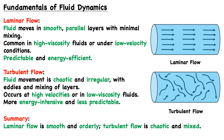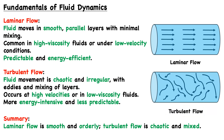Laminar flow is essentially the opposite of turbulent flow. In turbulent flow, fluid movement is chaotic and irregular, with eddies — essentially small whirlpools of fluid motion — and mixing of layers. Turbulent flow is more likely at higher velocities or in low viscosity fluids, and therefore it is more energy intensive and less predictable. We can see what turbulent flow looks like in the same pipe — no longer smooth parallel layers, but chaotic motion in all different directions.